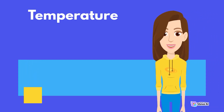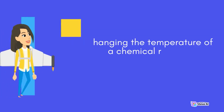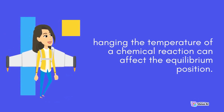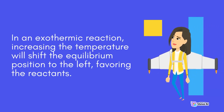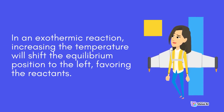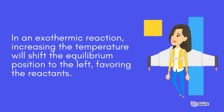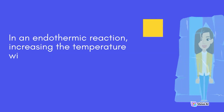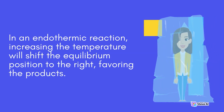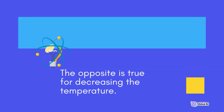Temperature. Changing the temperature of a chemical reaction can affect the equilibrium position. In an exothermic reaction, increasing the temperature will shift the equilibrium position to the left, favoring the reactants. In an endothermic reaction, increasing the temperature will shift the equilibrium position to the right, favoring the products. The opposite is true for decreasing the temperature.